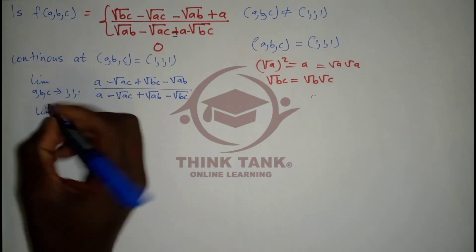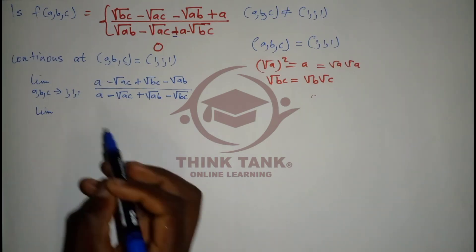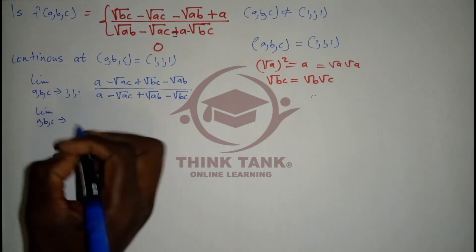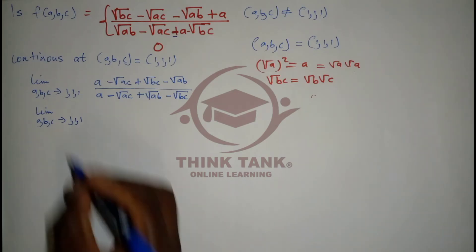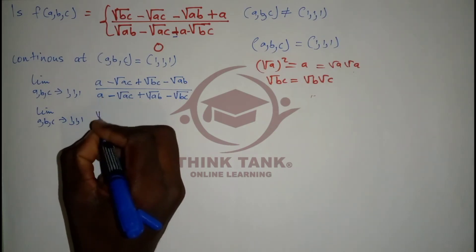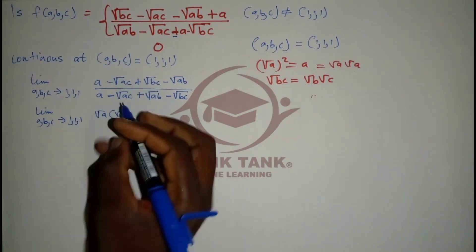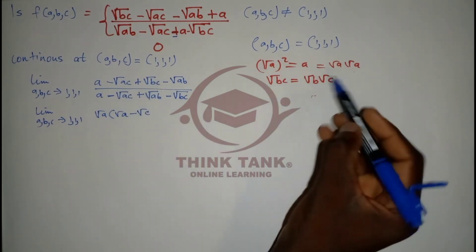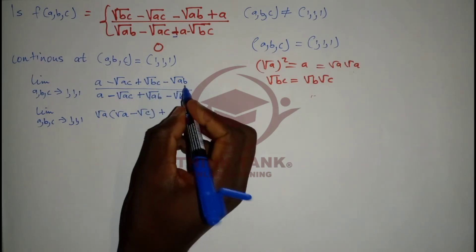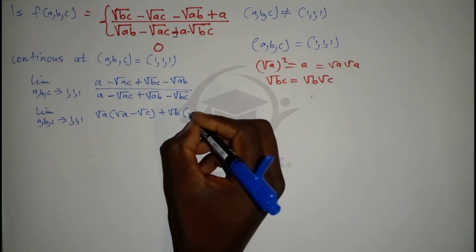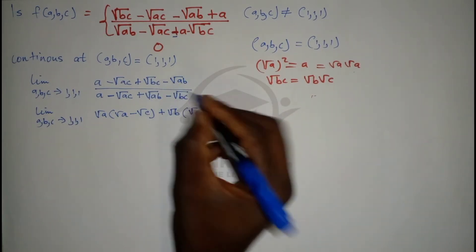I'm not going to write root(a) times root(a) explicitly to save space and keep the video short. So factorizing the numerator: factoring out root(a) from the first group gives root(a) times [root(a) minus root(c)], remembering root(ac) equals root(a) times root(c). For the second group, I'll factor out root(b), giving root(b) times [root(c) minus root(b)] — wait, root(c) minus root(a).